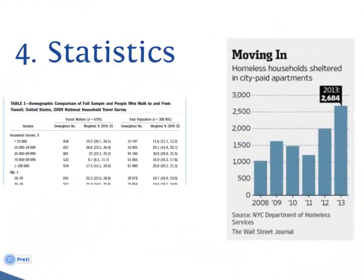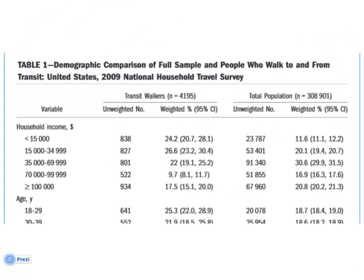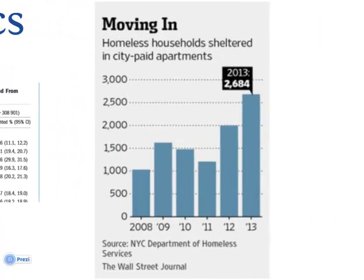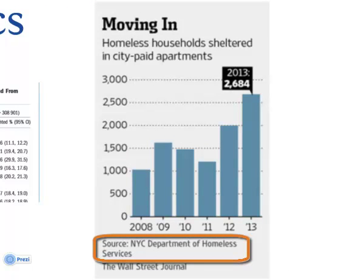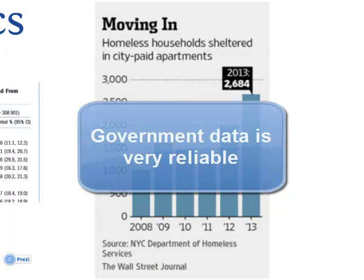Look for the origin of statistics. In this scholarly article from the American Journal of Public Health, the authors analyzed data already gathered by the U.S. Department of Transportation in the National Household Travel Survey. The authors did original research using existing data. This Wall Street Journal article reprinted numbers already gathered by the New York City Department of Homeless Services. We, the readers, can rely on the data in both of these examples as it was gathered by national and city governments.